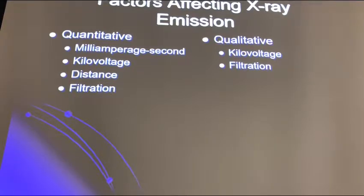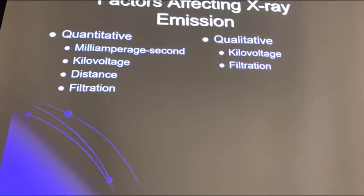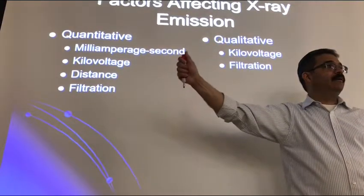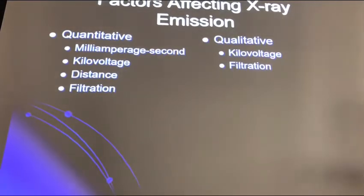The half value layer is used to measure quality, but it's not a factor — it's a numerical measurement. There are only two factors for quality and four that affect quantity. If you put a filter in, you saw a shift in the emission spectrum — the average energy shifts to the right but the amount goes down. That's why filtration appears in both quantity and quality.